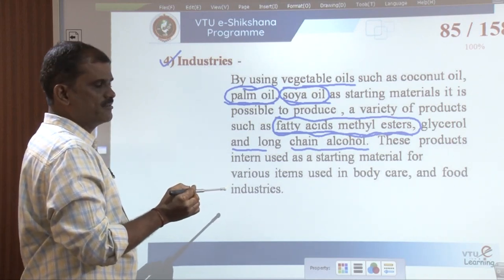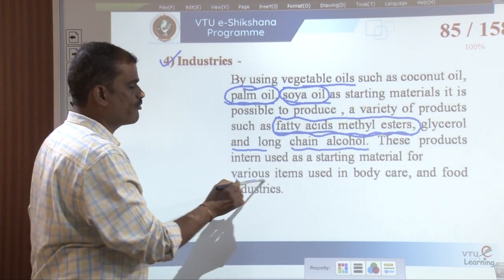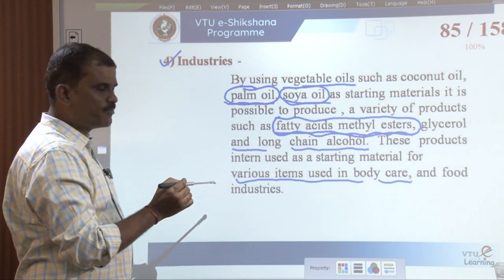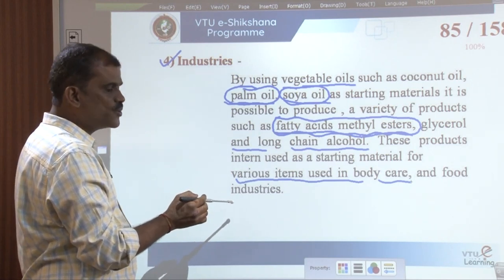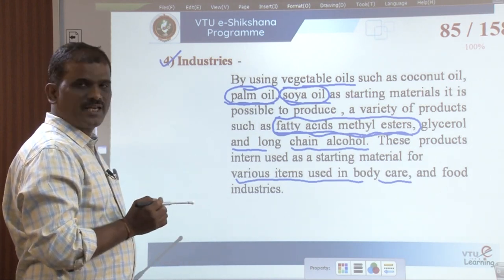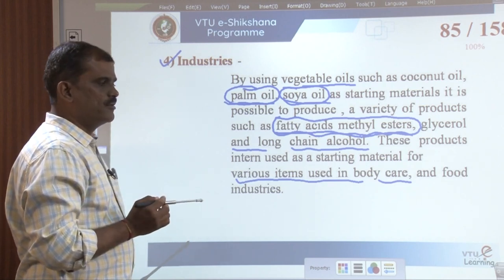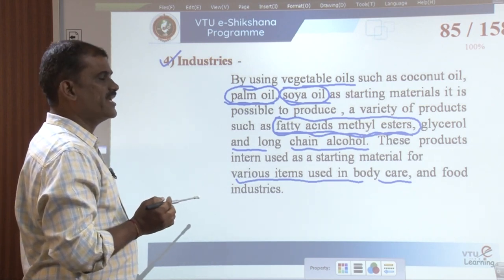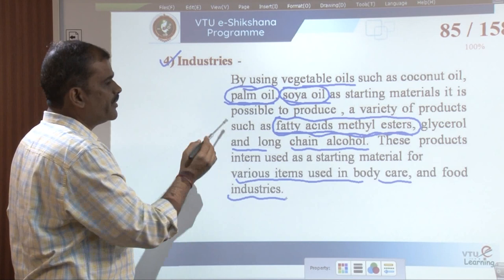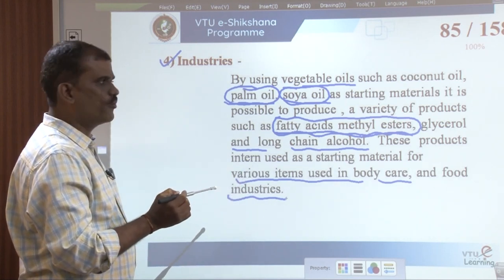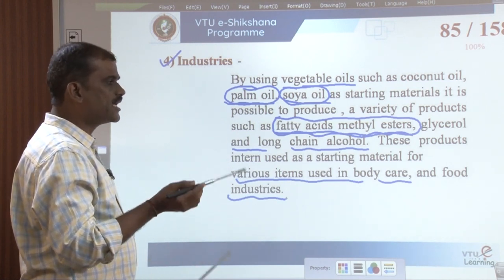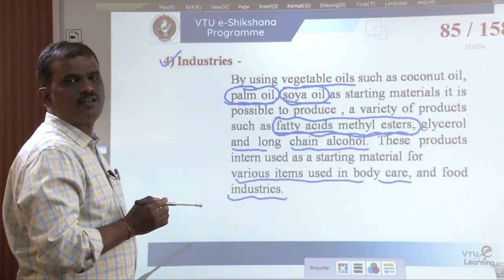These products in turn are used as starting materials for various body care items. Glycerol formed during the process can be used for the preparation of soap, body care lotions, etc., and it can also act as feed for cattle. By making use of such resources, we can minimize over-dependence on other countries for our fuel requirements.